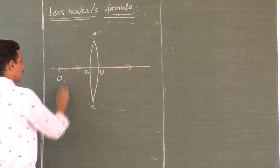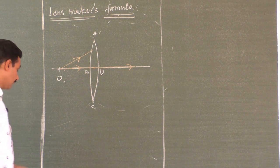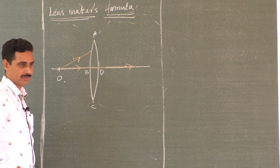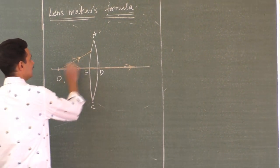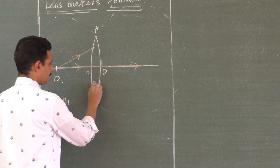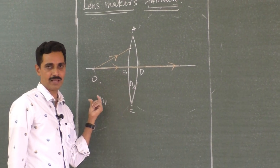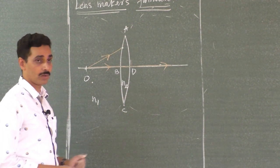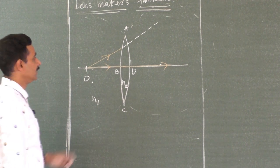What about the other ray? Consider another ray incident on the first surface. Let N1 be the refractive index of the medium outside and N2 be the refractive index of the lens. Assume this is rarer and this is denser — say air and glass. When a ray of light travels from a rarer to a denser medium, it bends towards the normal. But where is the normal? The original direction is here — to find the normal, complete this surface as part of its sphere. Its center may be somewhere here, and joining the center to the point of incidence gives the normal.